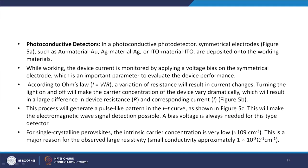In a photoconductive photodetector, symmetrical electrodes such as gold-material-gold, silver-material-silver, or ITO-material-ITO are deposited onto the working materials. While working, the device current is monitored by applying a voltage bias on the symmetrical electrode. According to Ohm's law, I = V/R, a variation of resistance results in current changes. Turning the light on and off makes the carrier concentration vary dramatically, resulting in a large difference in device resistance R and corresponding current I. This process generates a pulse-like pattern in the I-T curve, making electromagnetic wave signal detection possible. A bias voltage is always needed for this type of detector.